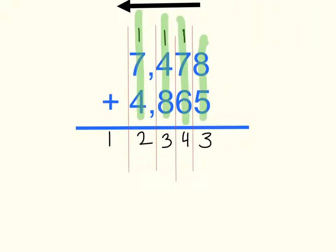The answer to the question 7,478 plus 4,865 is 12,343.